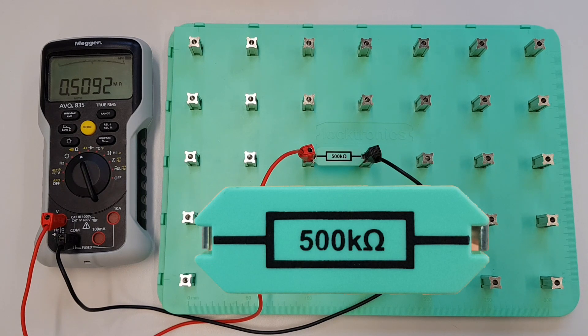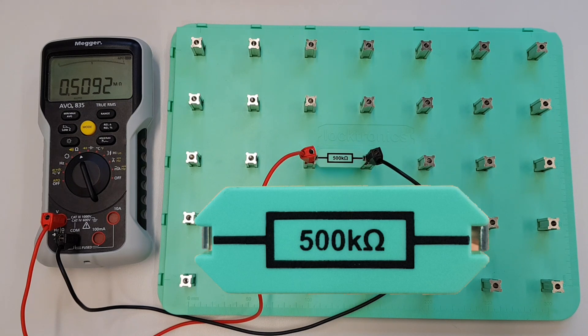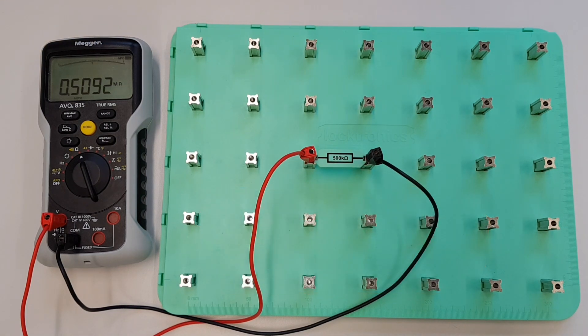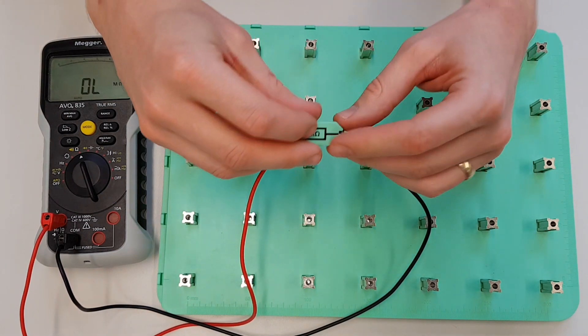So we can see there that the reading on the meter and the value of the resistor actually match perfectly, which is really good. Again, we've gone slightly over this time, so we've got our 5% above value that we've got to stay within, but we're well within that and that's really good. Now one more interesting thing about this is if we have a look at the back of this resistor carrier.